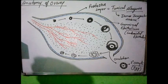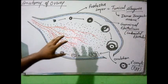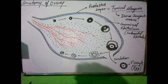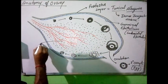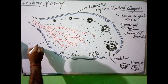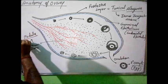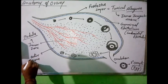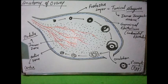The inner portion, just below the germinal epithelium, is filled with a kind of loose connective tissue called stromal tissue. This stromal tissue is divided into two zones marked by a dotted boundary: the inner zone is called the medulla and the outer zone is called the cortex.